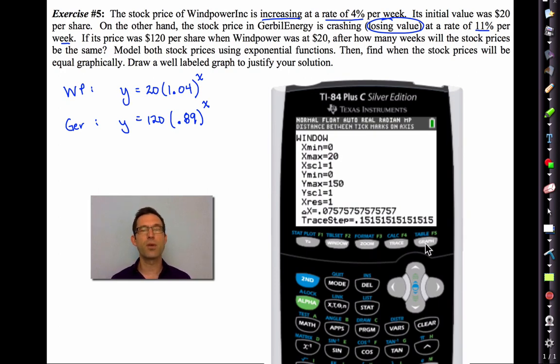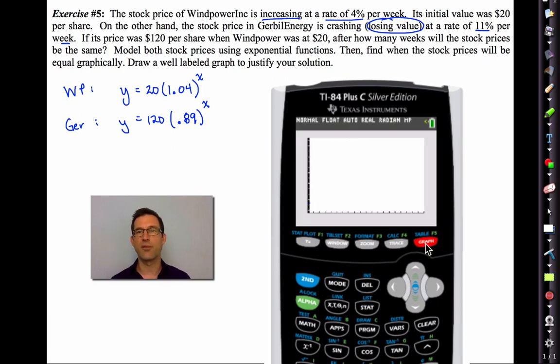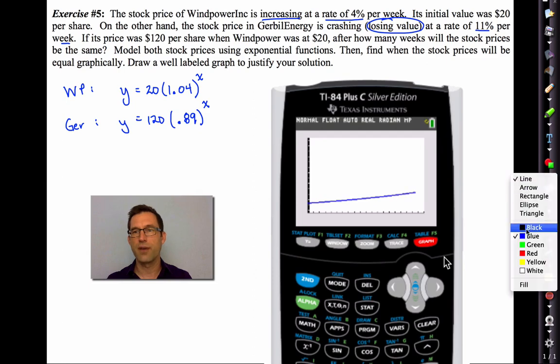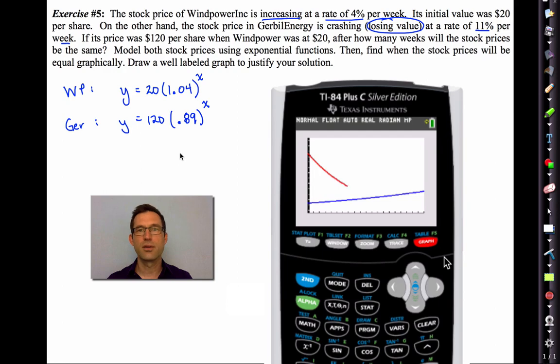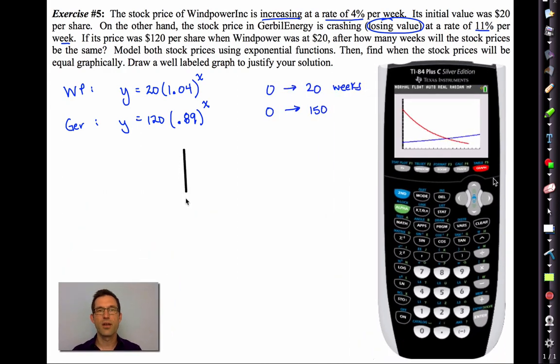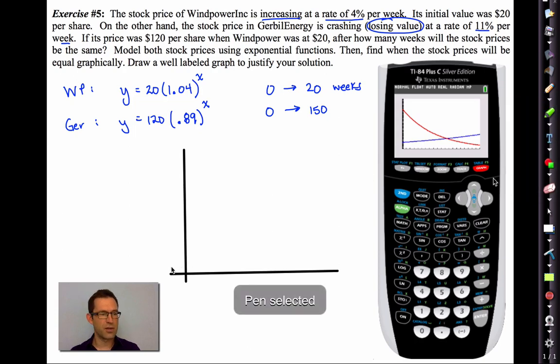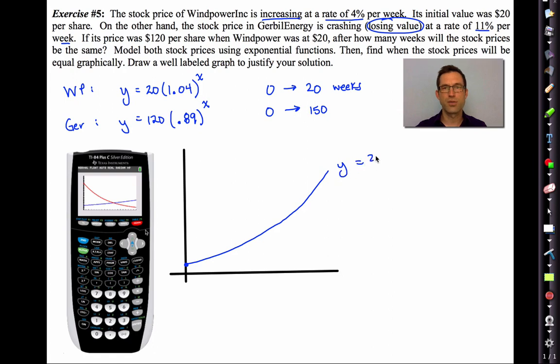And I think I try to find a line. All right, let's hit the graph. Let me see if I can reproduce this and then we'll find an intersection point. We'll try to reproduce it. First things first, we got your wind power. This is Y equals 20 times 1.04 to the X. Switch colors. This is our gerbil power. It's 120 times 0.89 to the X. Now let's find that intersection point. Specifically, let's find out its X coordinate.